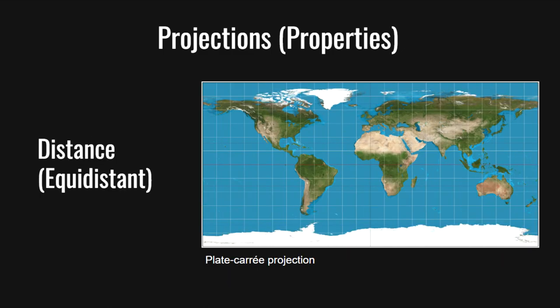Finally, we can conserve distances using an equidistant projection. It correctly represents distances, but it is limited, as distances can only be shown through the scale from one point to any other point on the map, or only in certain directions. For example, in the Platte-Carré projection, distances between parallels of latitude and meridians of longitude are consistent across the whole map.